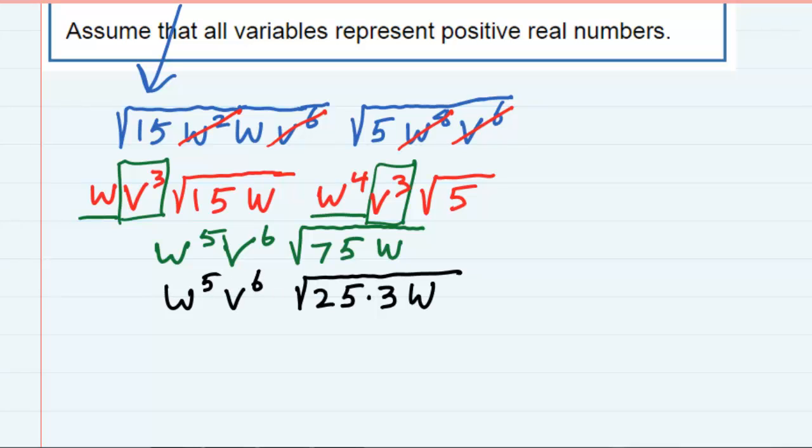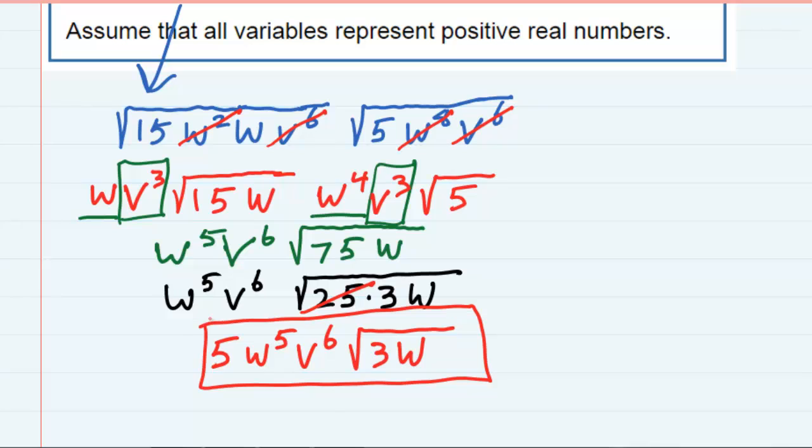And now, in the last simplification, I can pull out the 25 as a 5. The w to the fifth is already on the outside, the v to the sixth is already on the outside. And then underneath the radical, we still have a 3 and a w. So we've multiplied, and we've pulled out as much as we can from underneath the radical to simplify.